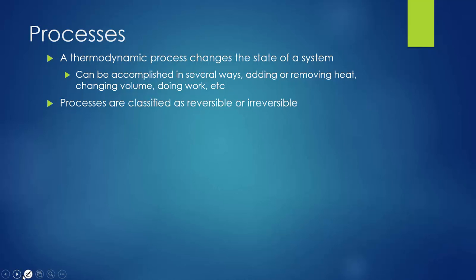Processes can generally be reversible or irreversible. An irreversible process happens very quickly, and we cannot retrace it. We don't know the state of the system at every point between the two states. We just know it started at one state and ended at another, but we don't know the path it took.